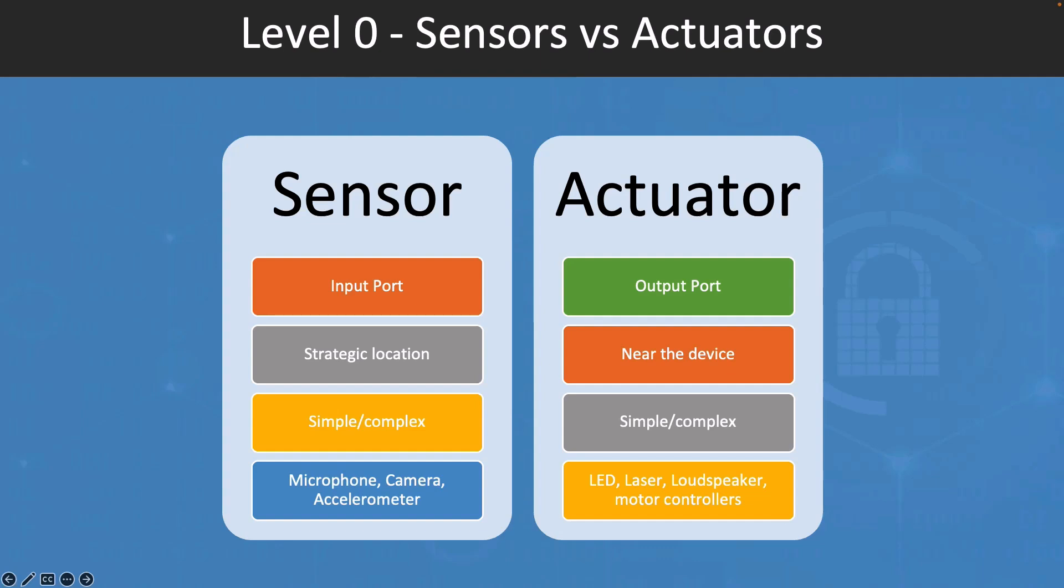Complexity-wise, sensors can be relatively simple devices that measure a single physical property, or they can be complex devices that use multiple sensing technology to measure multiple properties. Actuators can also be simple or complex depending on the nature of the physical action they perform.